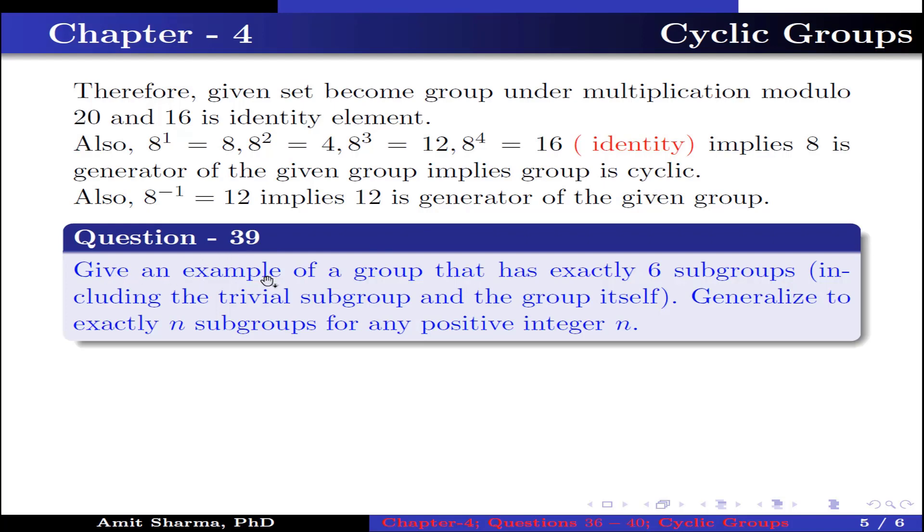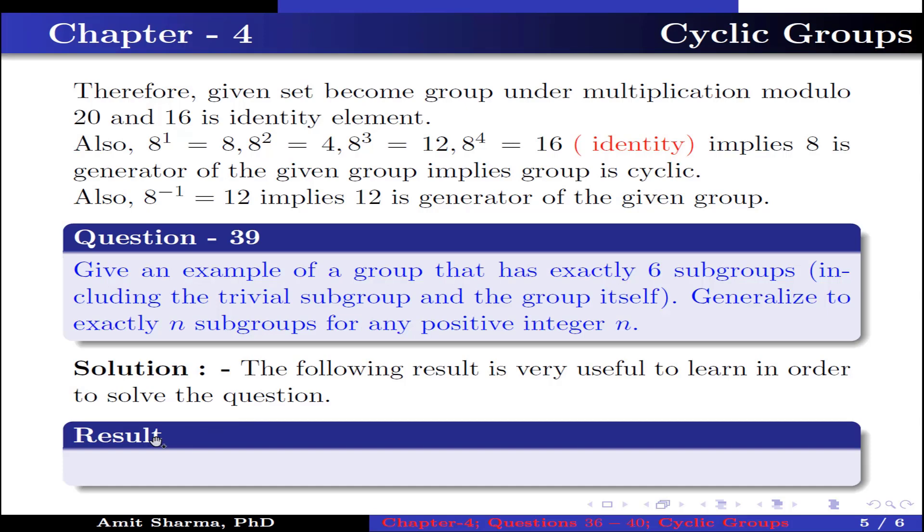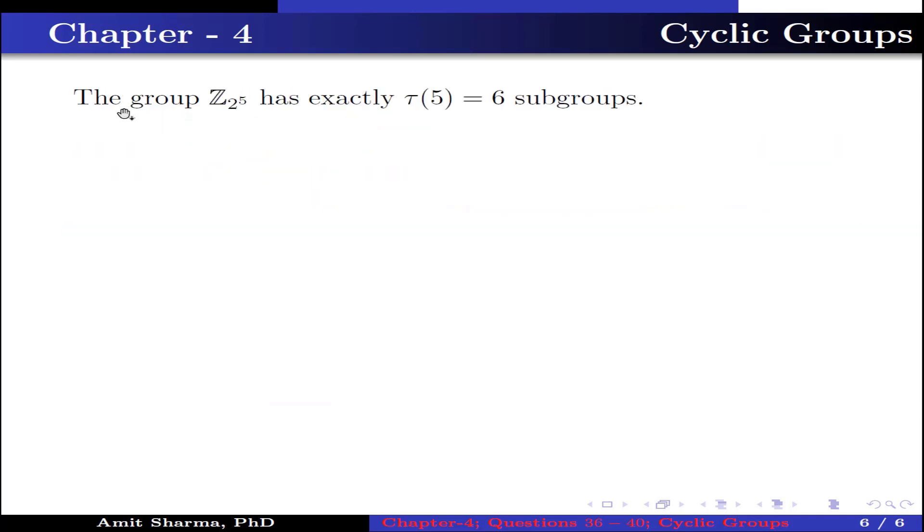Question number 39: Give an example of a group that has exactly 6 subgroups, including the trivial subgroup and the group itself. Generalize to exactly n subgroups for any positive integer n. The following result is very useful to solve the question. Result: The number of subgroups in a group Zₙ is τ(n), where τ is the number of positive divisors of n. The group Z₂₅ has exactly τ(5) = 6 subgroups. In general, the group Z₂ⁿ⁻¹ has exactly τ(n-1) = n subgroups.